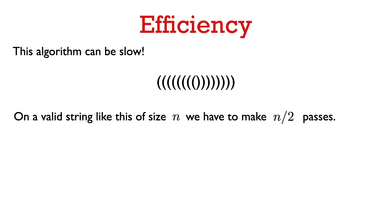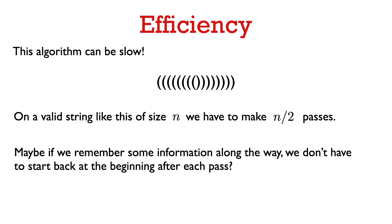This algorithm can be kind of slow. If we have a string of length n with n/2 opening parens followed by n/2 closing parens, then on each pass we're only going to delete one pair of parens. So we'd need to make n/2 passes over the input to reach the empty string. Let's try to come up with a faster algorithm. It seems wasteful to start back at the beginning with each pass — if we somehow remember some information and keep track of what we've seen, we don't have to start over again with each pass.